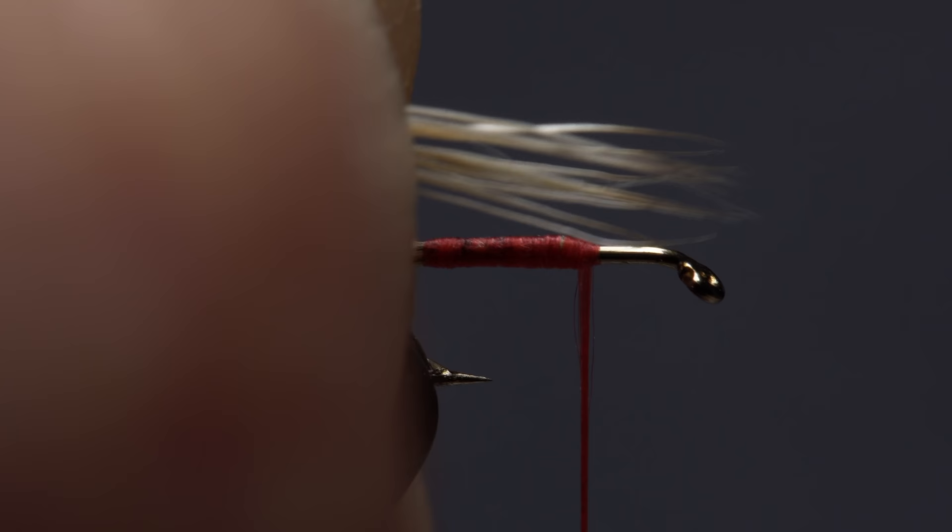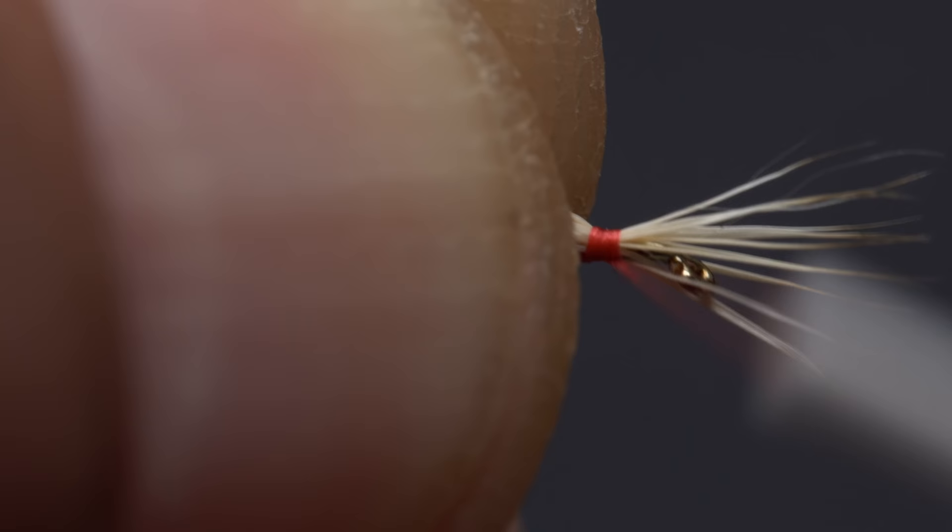You want the antennae to be a little more than a half a hook shank in length. With the hair measured use a pinch wrap to secure it to the top of the hook shank and take wraps forward leaving just a small amount of space behind the hook eye.